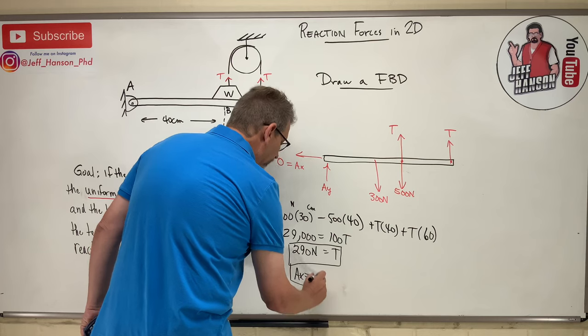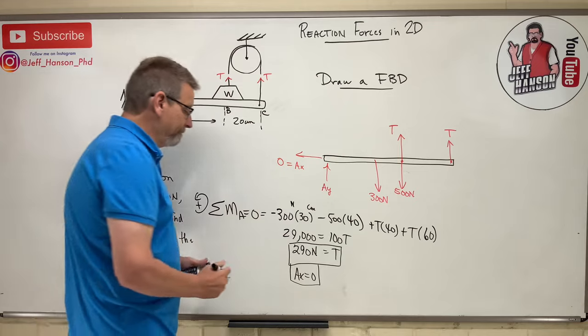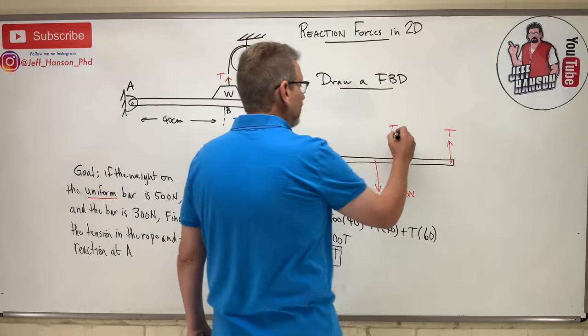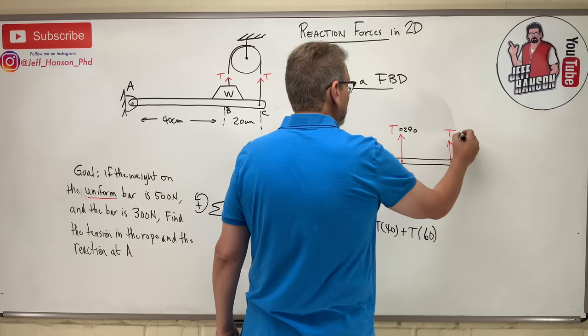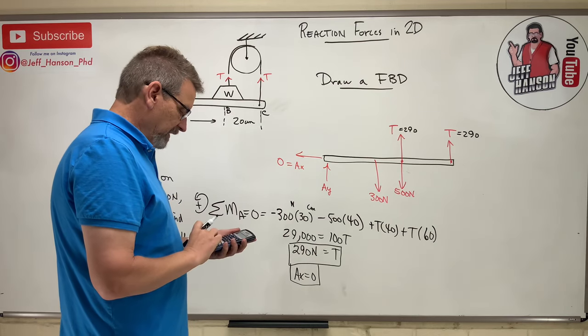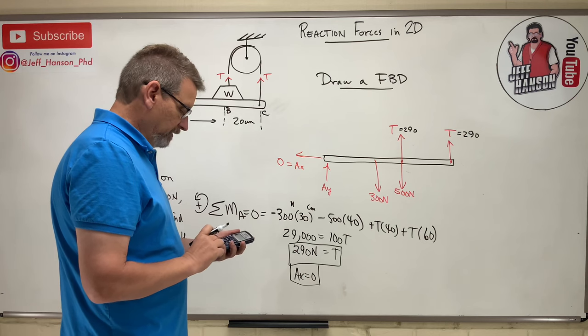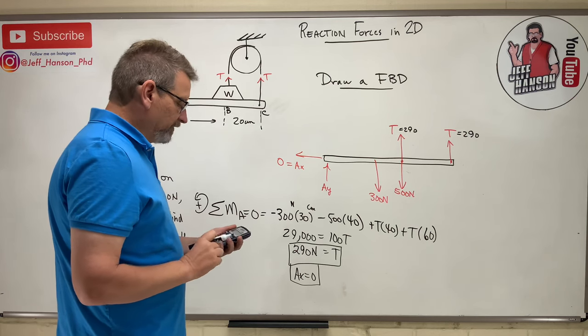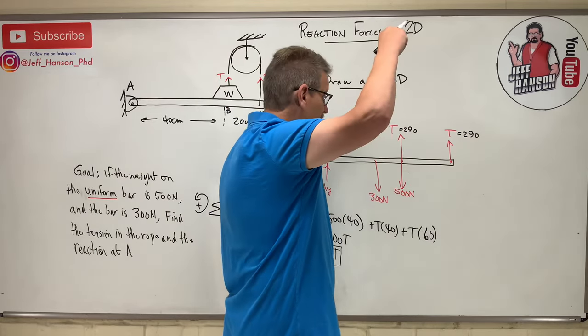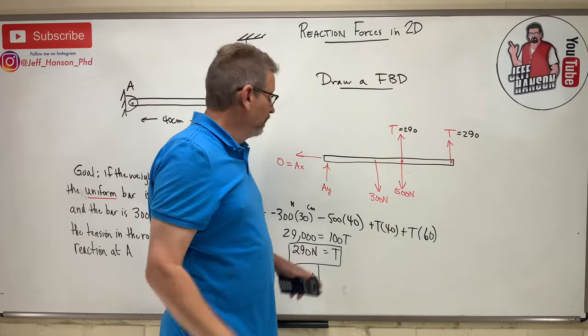Now we already know that Ax is zero, so the only other thing we need to find for that reaction at point A is we need to find Ay. And Ay - the up stuff has to equal the down stuff, right? So this guy is 290, this guy is 290. Let me see, 290 times 2 equals 580, minus 500, minus 300 equals... so the net of all of this stuff here, the net of all of this is 220 pounds - or Newtons rather - downwards.